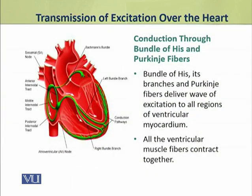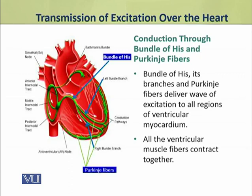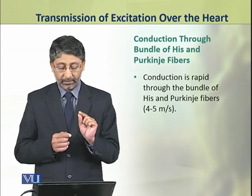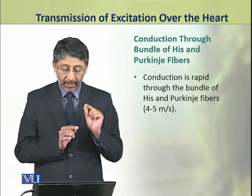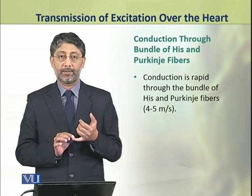We shall discuss the conduction of impulse through the bundle of His and the bundle branches to the Purkinje fibers and to the myocardial cells of the ventricles. The bundle of His, its branches, and Purkinje fibers deliver the wave of excitation to all regions of ventricular myocardium. The conduction velocity in these fibers is rapid — about 4 to 5 meter per second.